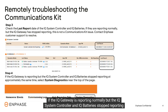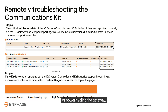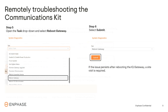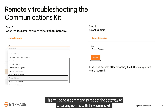If the IQ gateway is reporting normally, but the IQ system controller and IQ battery stopped reporting at approximately the same time, click the system diagnostics link near the top of the webpage to start the process of power cycling the gateway. Use the drop-down task box and select the reboot gateway option, and then click submit. This will send a command to reboot the gateway to clear any issues with the comms kit.